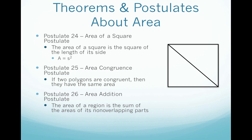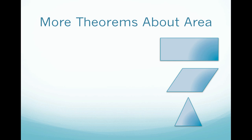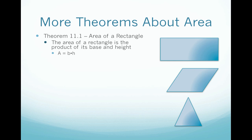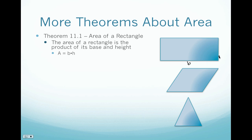Moving on to more theorems about area. The first theorem is about the area of a rectangle, and it states that the area of a rectangle is the product of its base and its height — you may have known it as length times width. We'll refer to the bottom part as the base, and this vertical length as the height, so the area equals base times height.